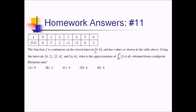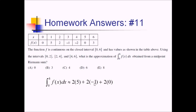On this problem, the function F is continuous on a closed interval from 0 to 6, and has the table values given here. Using the intervals 0 to 2, 2 to 4, and 4 to 6, we want the approximation obtained from a midpoint Riemann sum. So if we're doing midpoints, that means we are using the x values 1, 3, and 5. Those are the midpoint x values, and we want the y values that go with those: 5, negative 1, and 0. So approximating this, we have a base of 2 times a height of 5, then a base of 2 times a height of negative 1, and a base of 2 times a height of 0. So that's going to be 10 minus 2, which is 8, plus 0 is still 8. So that's going to be choice E.